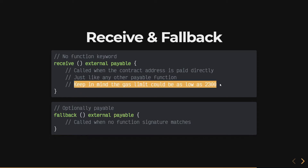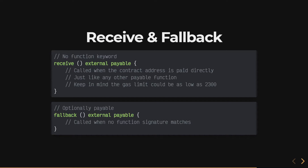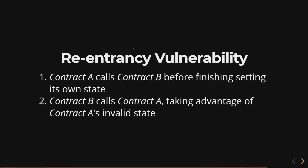An important note: your gas limit could be as low as 2300, meaning you'd only have enough gas to emit an event and not much else. Keep that in mind with receive and fallback functions. These keywords are relatively new in Solidity.